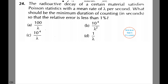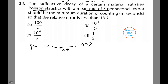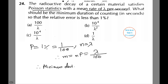The radioactive decay of a certain material satisfies Poisson statistics with a mean rate of lambda per second. What should be the minimum duration of counting in seconds so that the relative error is less than 1%? Here the relative error P equals 1% which equals 1 over 100, and N equals lambda, therefore M equals N times P which equals lambda over 100. Therefore minimum deviation equals 1 over M which equals 100 over lambda. The answer is option A.